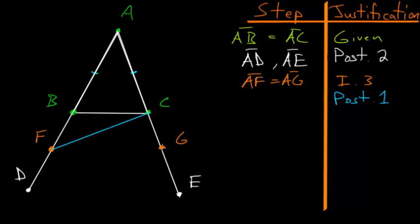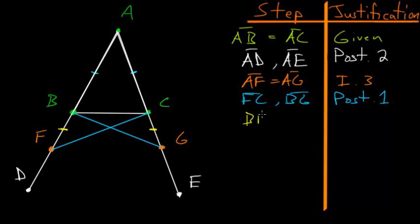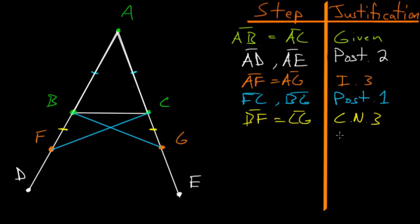Using Postulate 1, which says we can connect a straight line between any two points, we draw FC and BG. Since AB equals AC and AF equals AG, it follows that BF equals CG. This is due to Common Notion 3, which says that if equals be subtracted from equals, the remainders are equal — we subtract AB and AC from AF and AG, leaving equal parts BF and CG.